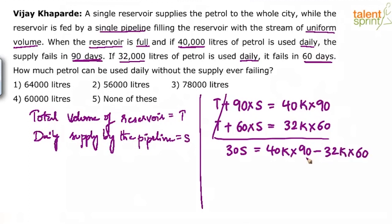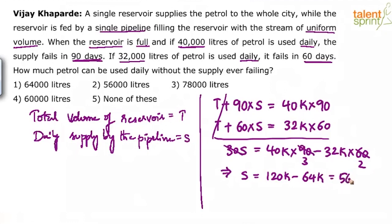So 30S = 40,000 × 90 − 32,000 × 60. Dividing: 90/30 = 3 and 60/30 = 2. Therefore S = 40,000 × 3 − 32,000 × 2 = 120,000 − 64,000 = 56,000. The daily supply from the single pipeline is 56,000 liters.